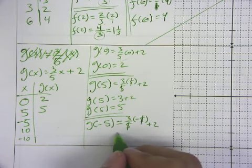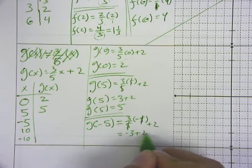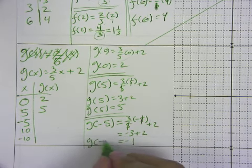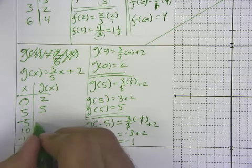So it would be 3 times negative 1, which would be negative 3 plus 2, which would be negative 1. So we've got g of negative 5 is equal to negative 1.